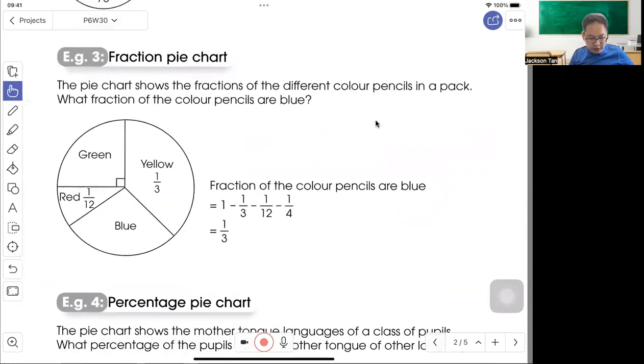This is a fraction pie chart of different color pencils in a pack. What fraction of the color pencils are blue? So one whole minus 1/12, 1/3, and 1 out of 4. Can you see? 90 degrees, 1 out of 4. You get the blue, 1/3.